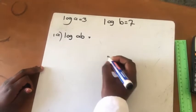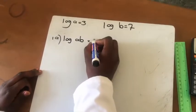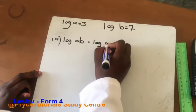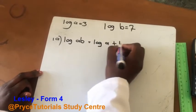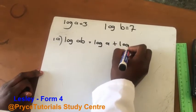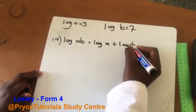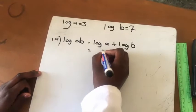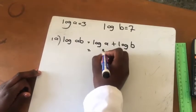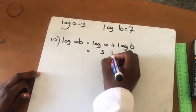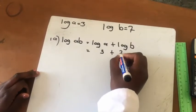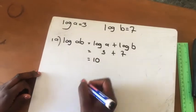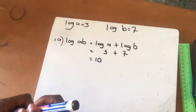So now log a, b — I'm going to split this as log a plus log b. Log a is equal to 3, then b of course is 7, so my answer will be 10.